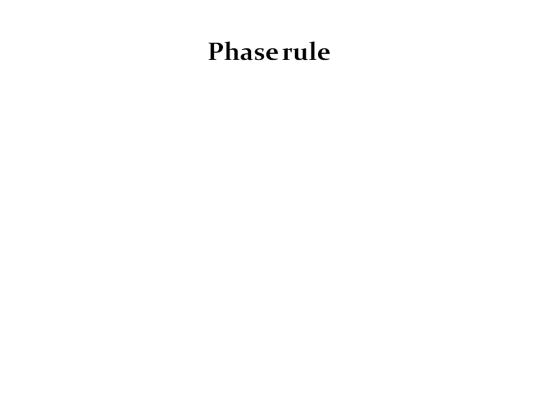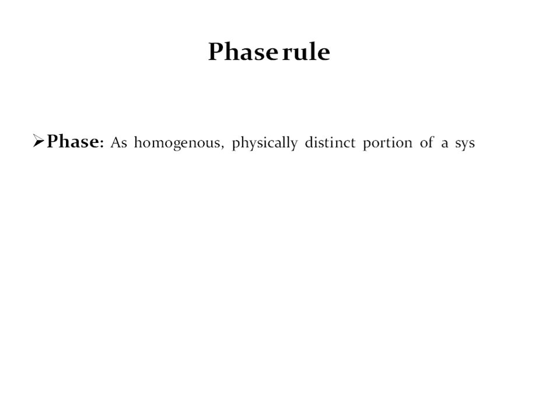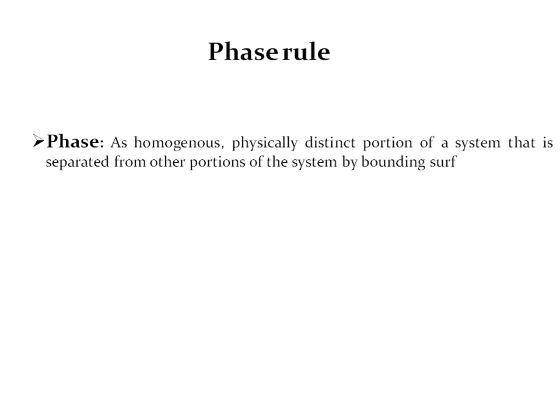Instead of directly moving towards the phase rule, we will discuss some definitions which are included in phase rule. The first definition is phase: a homogeneous and physically distinct portion of the system that is separated from other portions of the system by a bounding surface is known as phase.